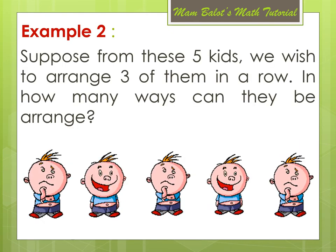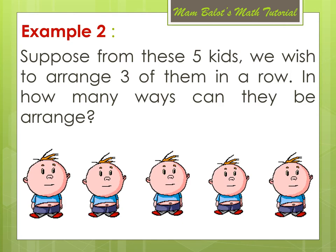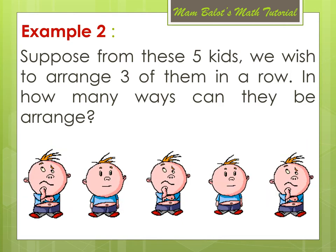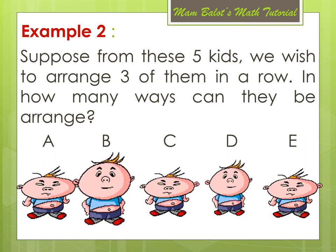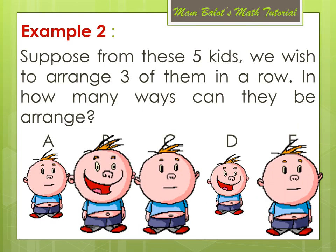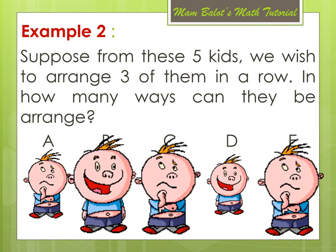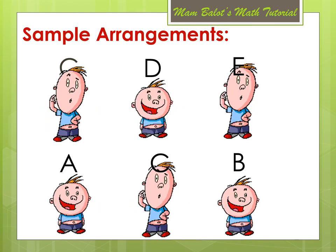Another example: suppose from these 5 kids, we wish to arrange 3 of them in a row. In how many ways can they be arranged? Say we label these kids as kid A, B, C, D, and E. We are choosing kid B, kid C, and kid E as one sample arrangement, or we can choose kid C, D, and E, or kids A, C, and B.